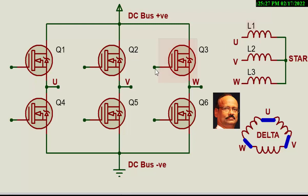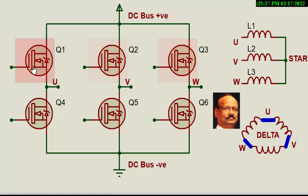We will start with this basic three-leg switches. These three are upper switches, or top-level switches, we can call them, and these three are bottom-level switches. They could be MOSFETs or IGBTs.